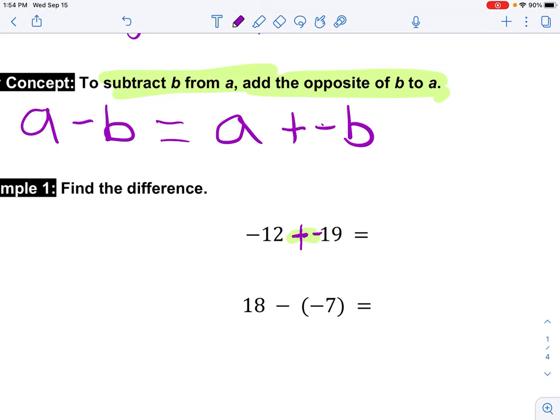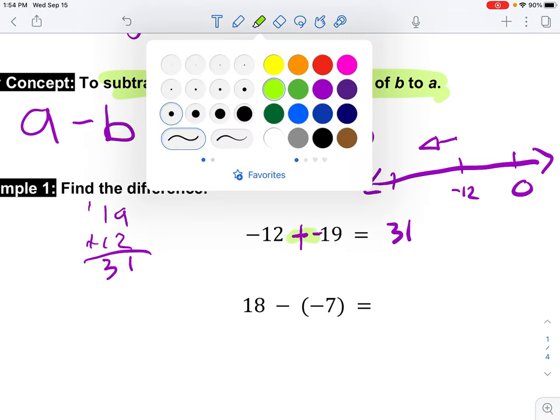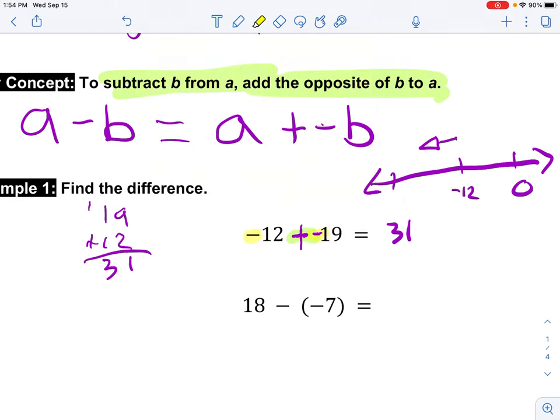And if we think about it, it makes sense. I started at negative 12. I'm taking away 19 more. So if you're taking away 19 more, you're going to be going more negative. So if I start at negative 12 and I'm taking away 19 more, I'm going to go further away from zero. So when I add 19 and 12, I end up getting 31. But again, because both of these are negative, my answer is going to be negative 31.